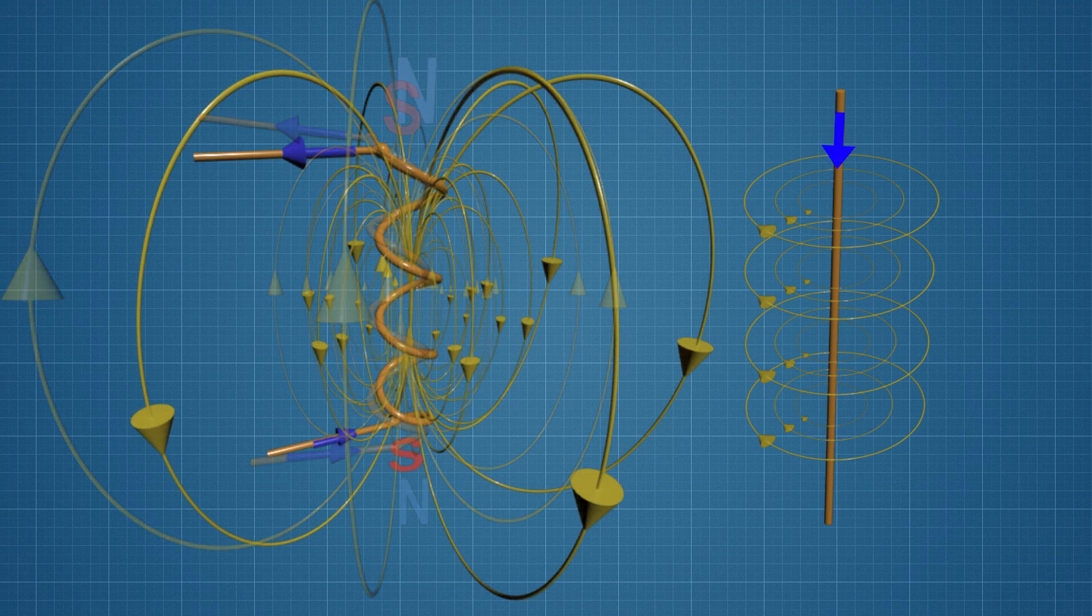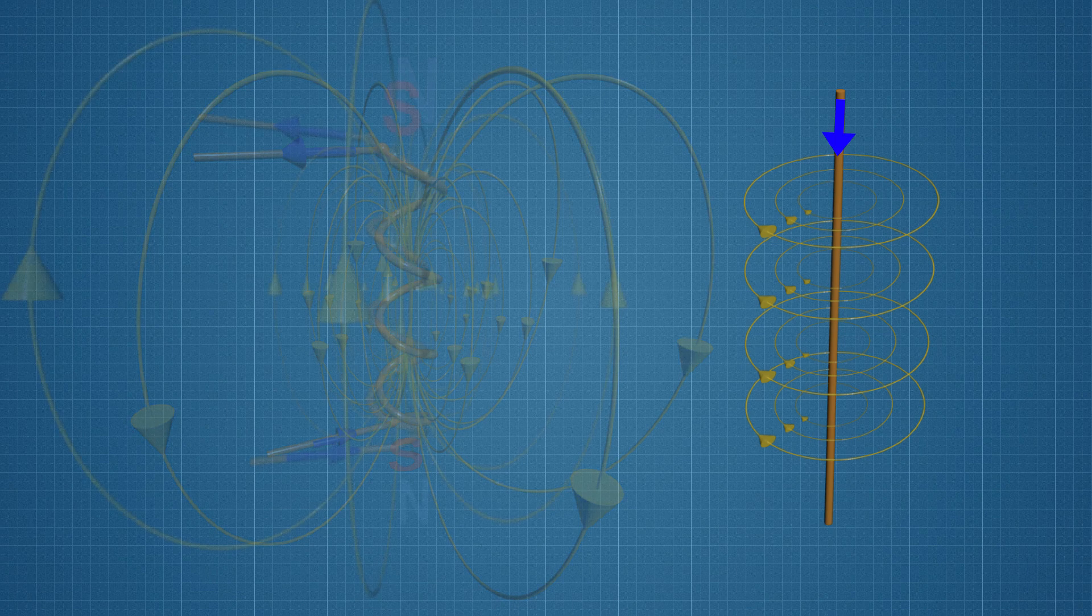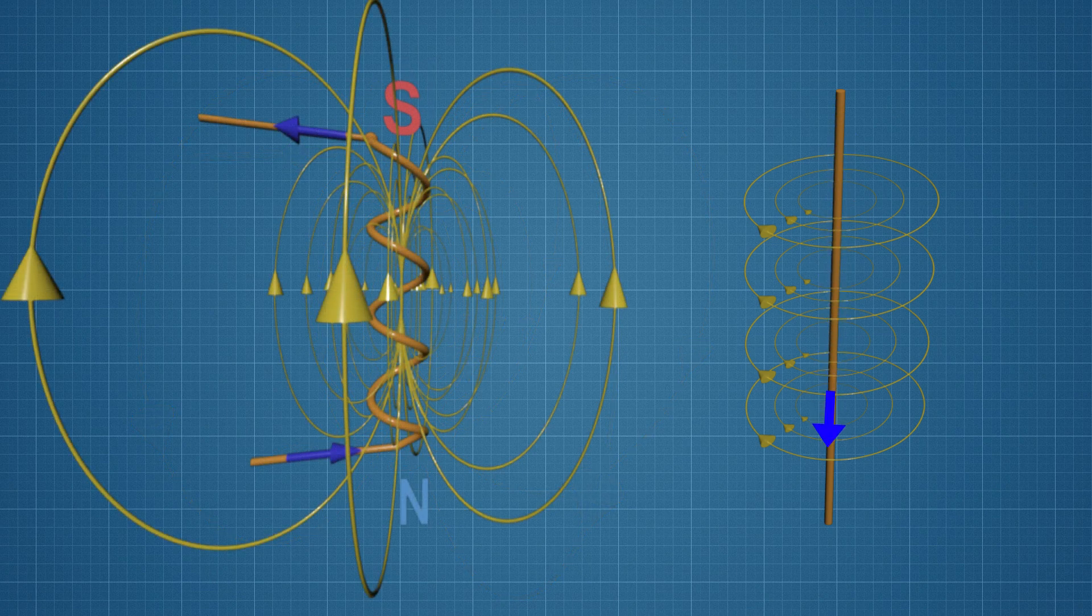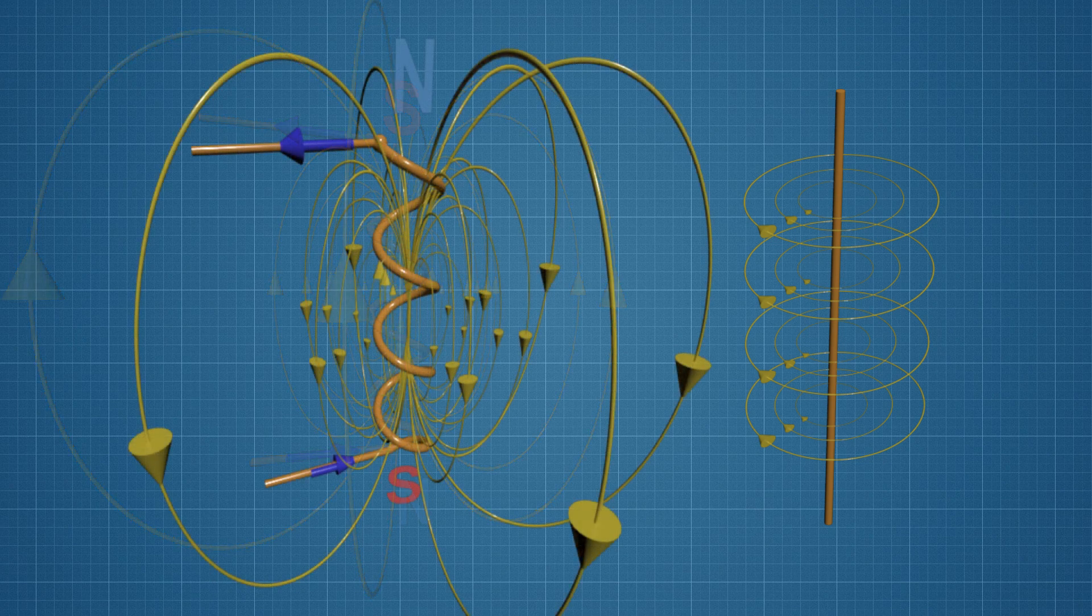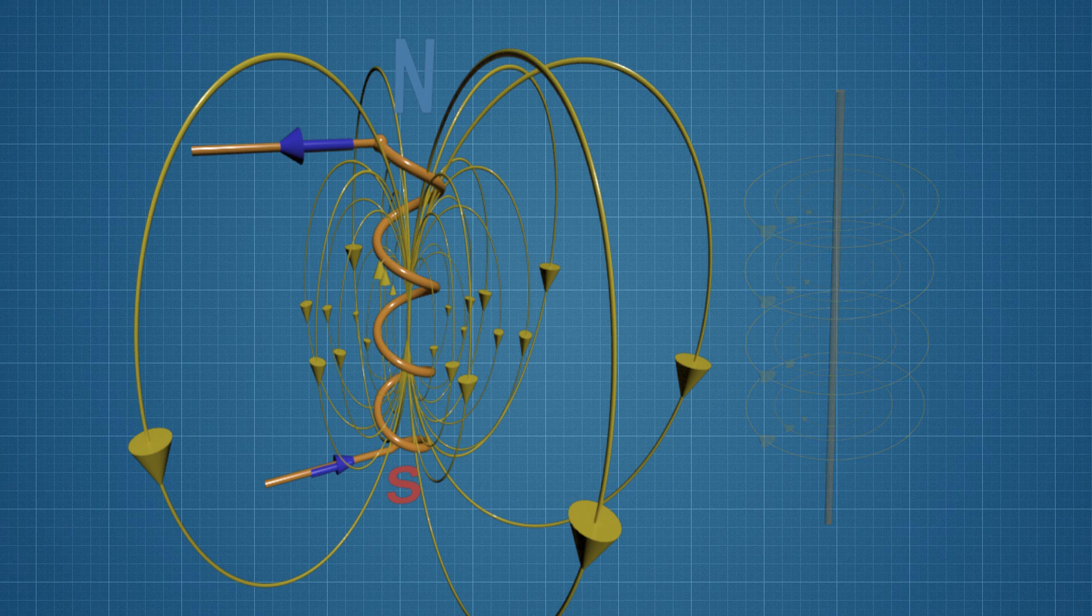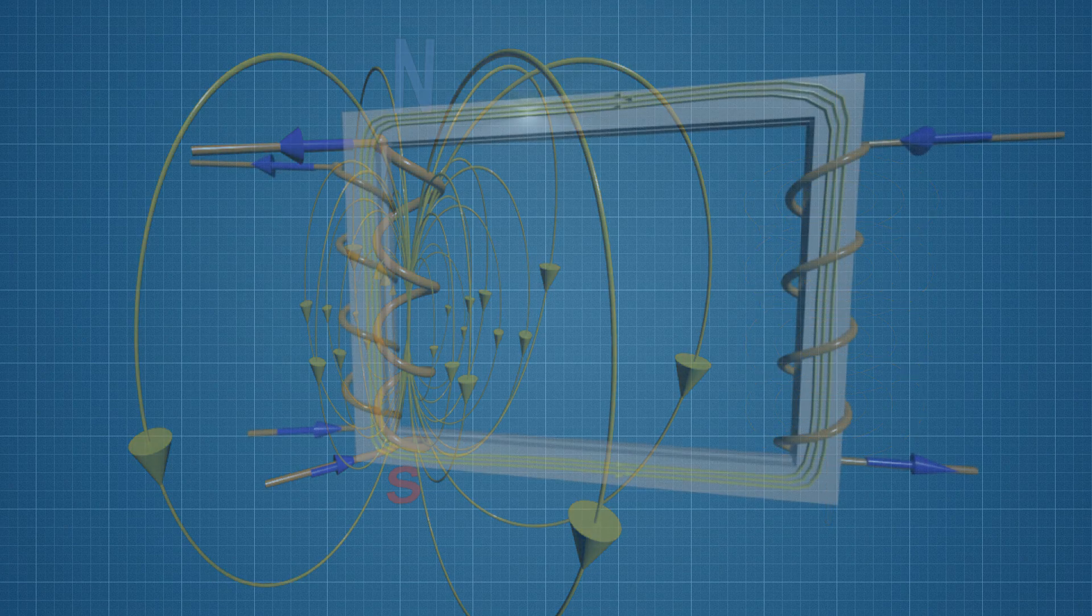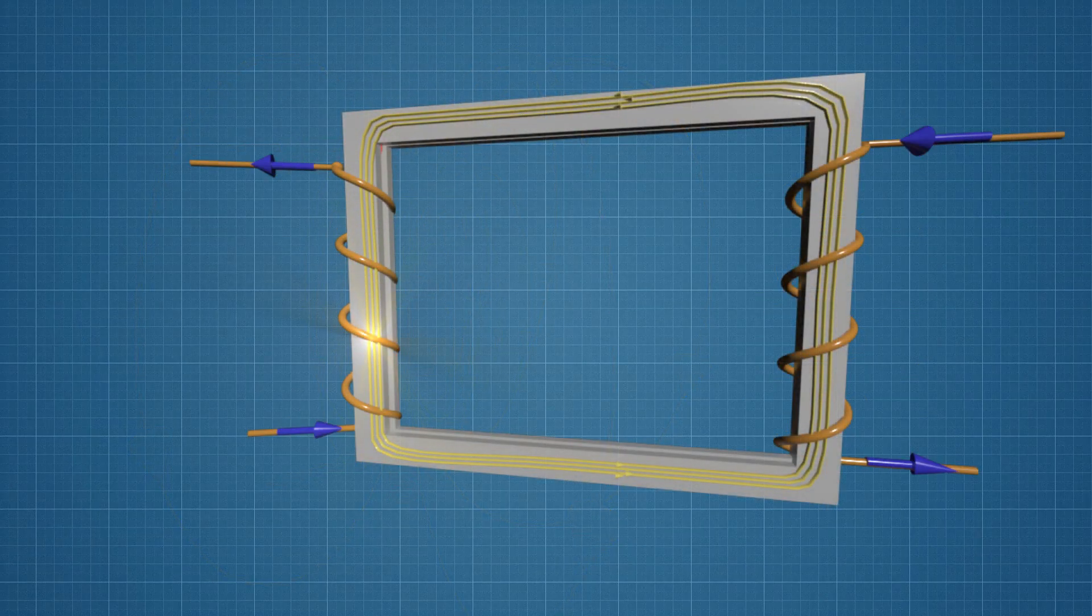The lines of force of the electromagnetic field created by a coil will look as shown in the figure. Due to the variable nature of the current flowing through the coil, the electromagnetic field will also be variable. This means that its lines of force will fluctuate.